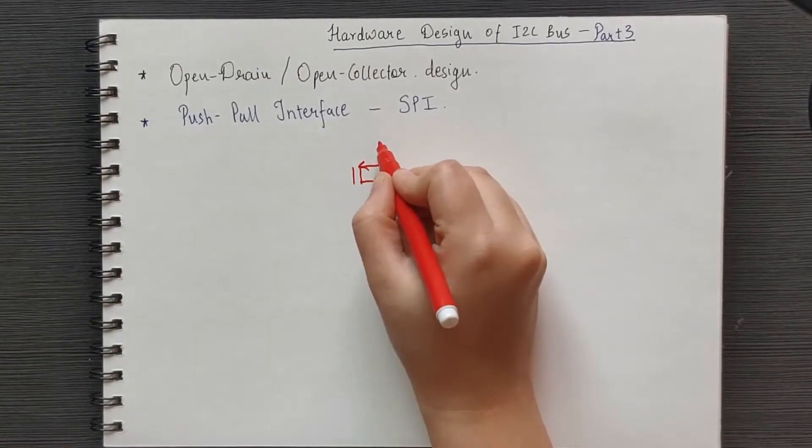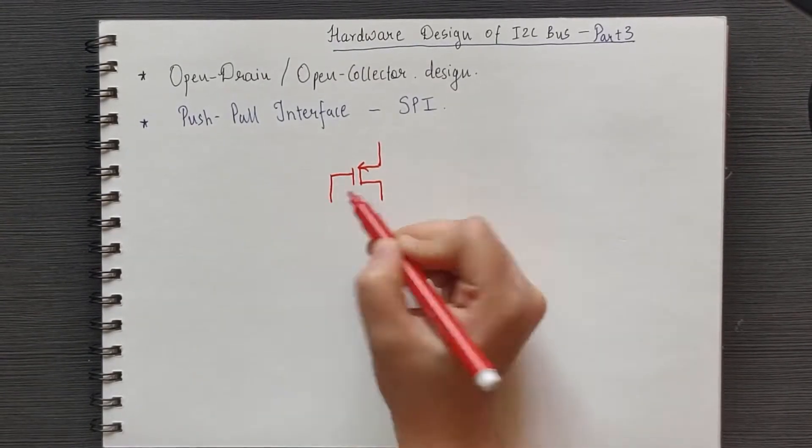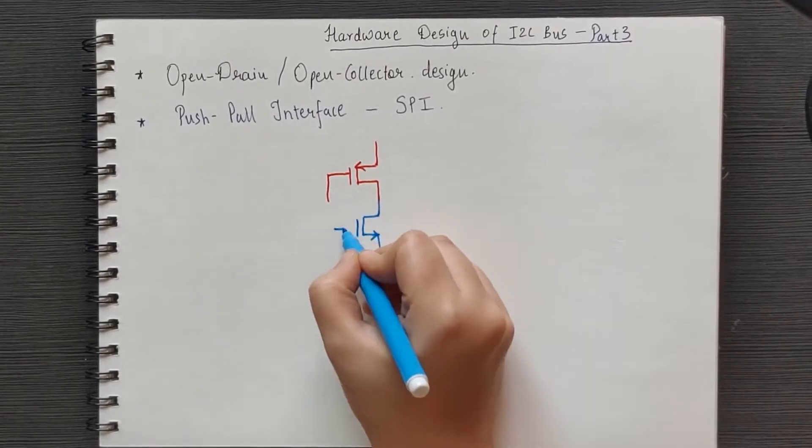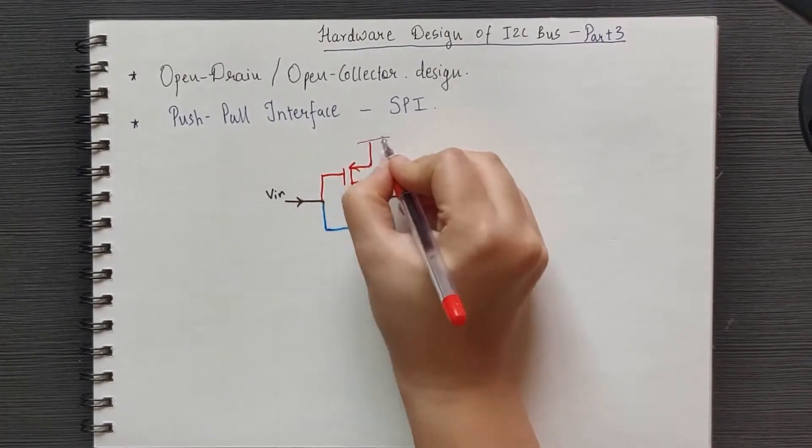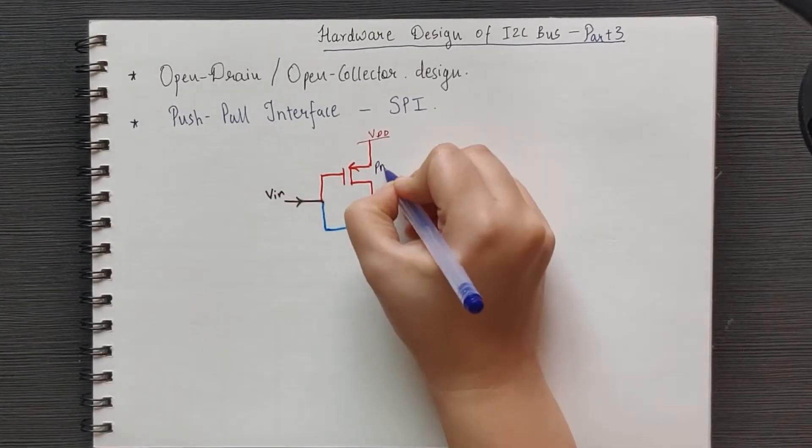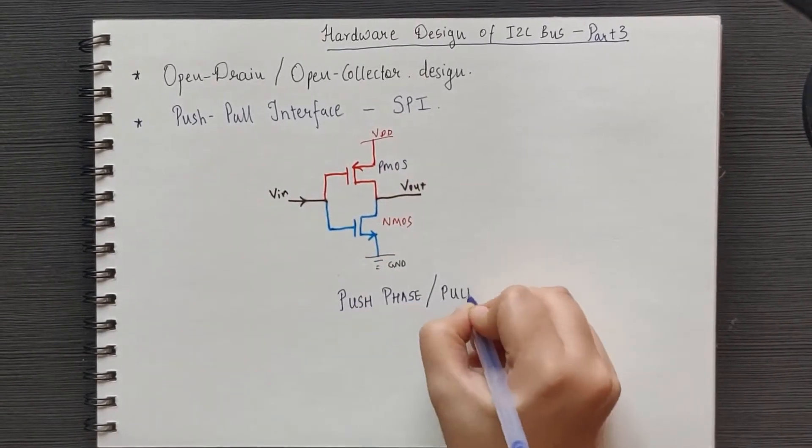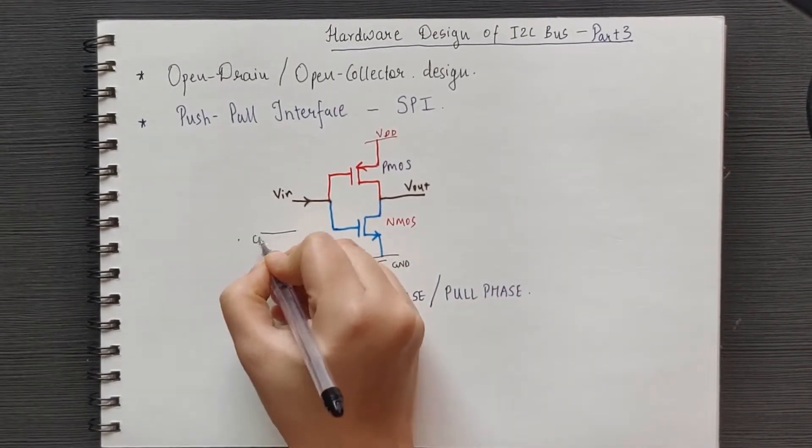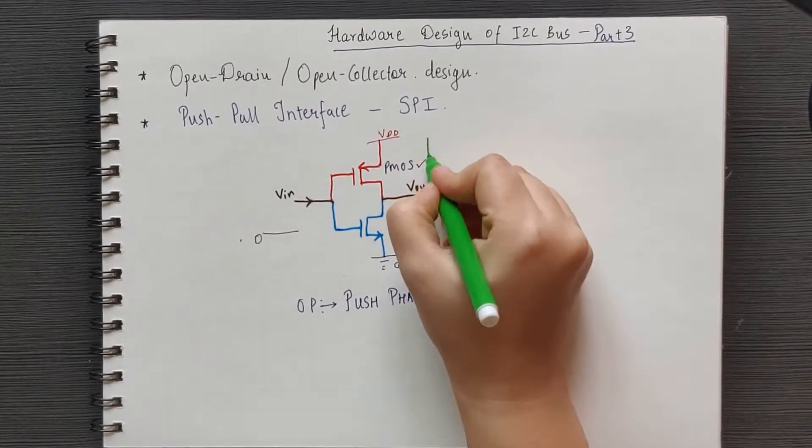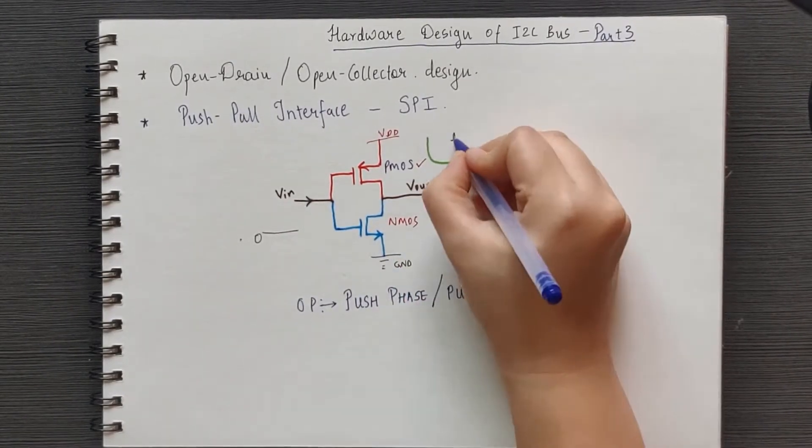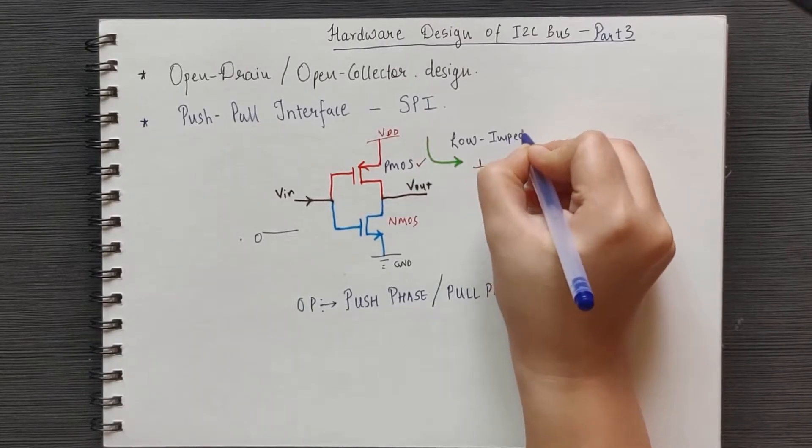It comprises of a PMOS and an NMOS FET or BJT. As the name suggests, the push-pull output operates either in the push phase or the pull phase. When the input is at logic low, the PMOS is on, the NMOS is off and the current flows through the PMOS.